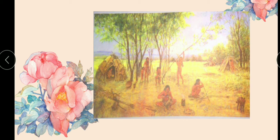The huts are made of bamboo, straw, dried leaves, and mud. They are known as kachcha houses or temporary houses. It means early men lived in kachcha or temporary houses. But nowadays, many people in villages also live in temporary or kachcha houses.